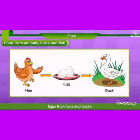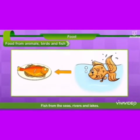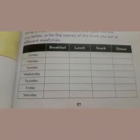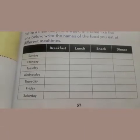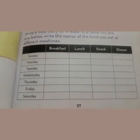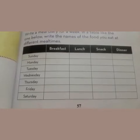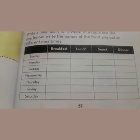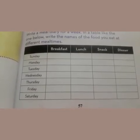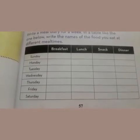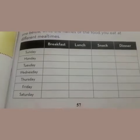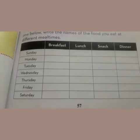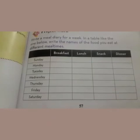We get eggs from hen and duck, and fish from the seas, rivers, and lakes. So we get carbohydrates, minerals, proteins, vitamins, and fats from all these animals, fruits, vegetables, etc., or from all these food items.